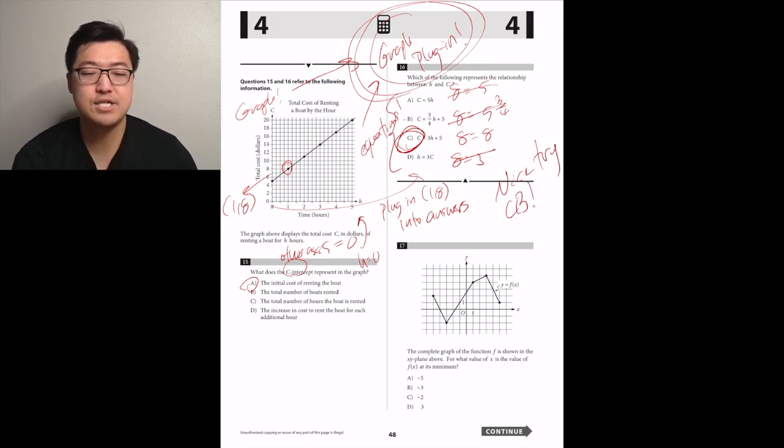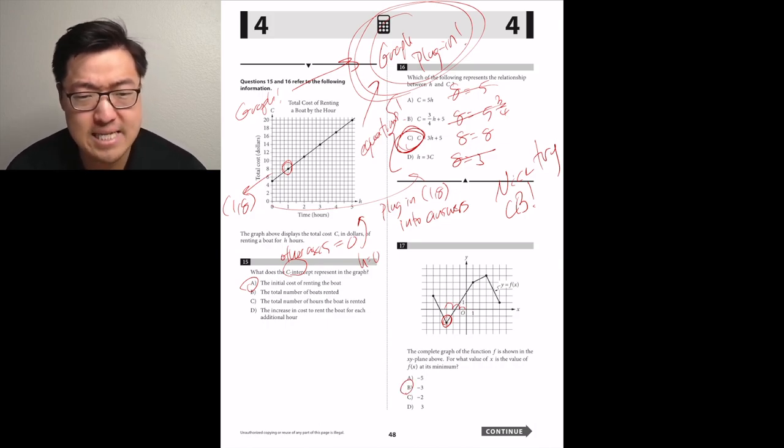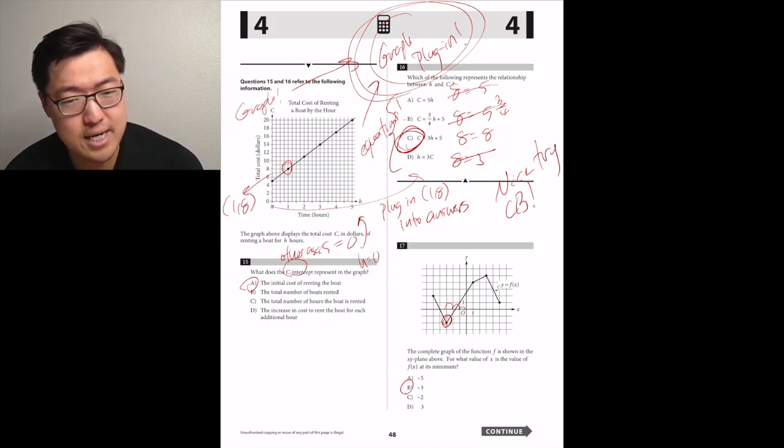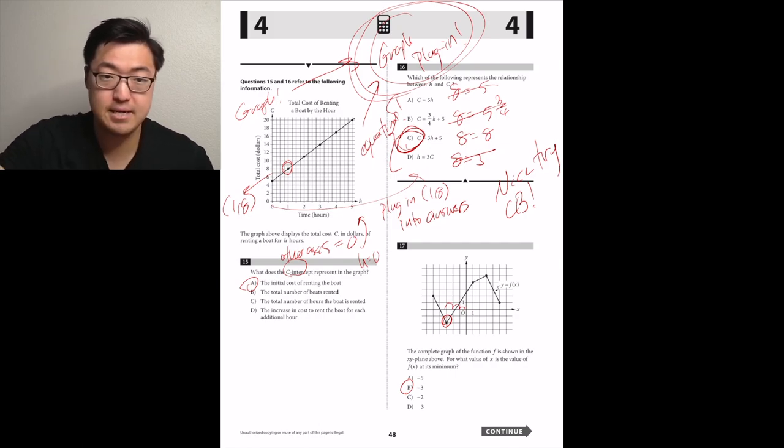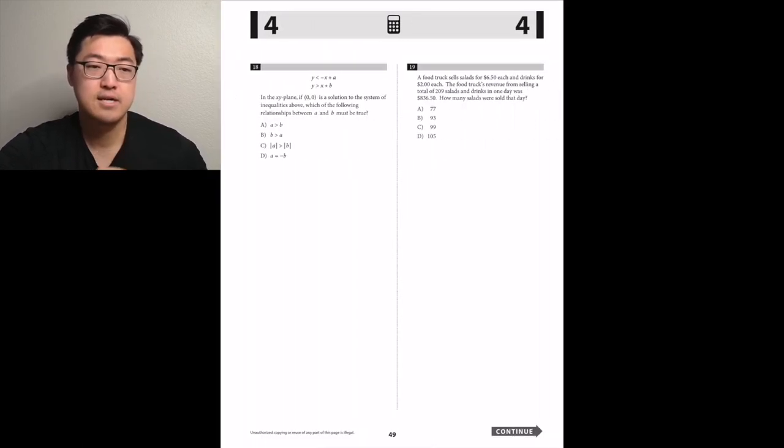Number 17, the complete graph of the function f is shown in the xy-plane above. For what value of x is the value of f of x at its minimum? Well, f of x, the entire graph, f of x would be like the y value. So the place where y is at its minimum would be like where y is negative 2. And the x-coordinate where y is negative 2 would be negative 3.